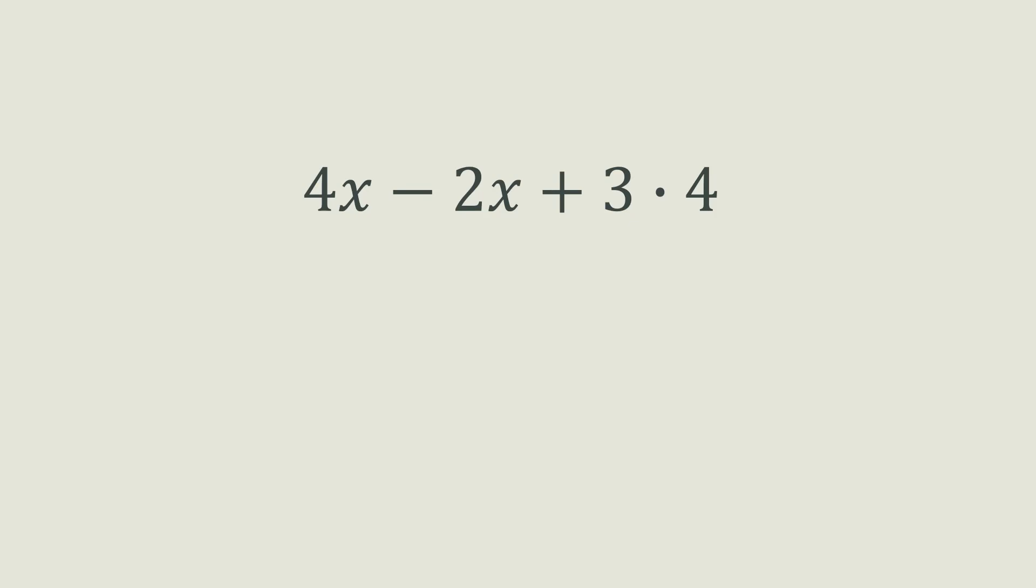Alright, so I'm assuming that you paused the video to simplify the expression, right? Well, now let's go over it. 4x and 2x are like terms, so you can subtract 4x and 2x which will equal 2x.